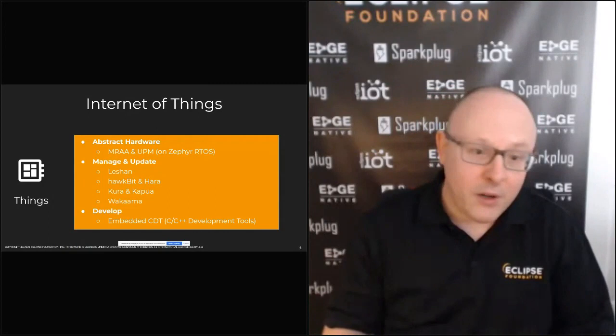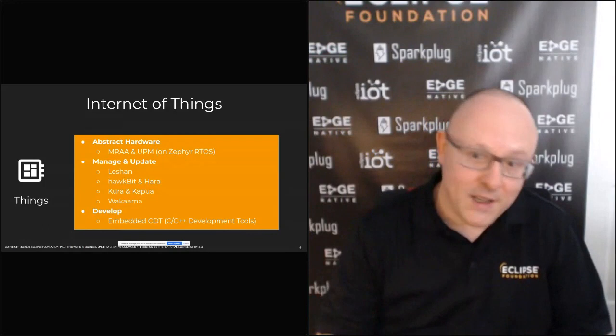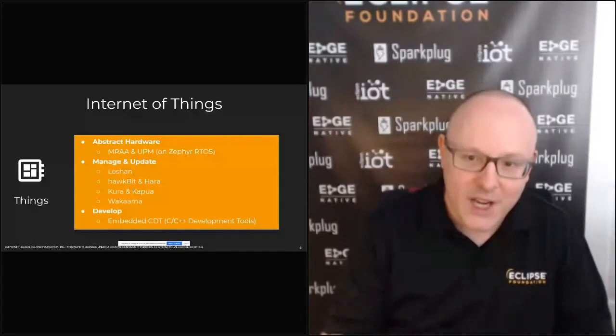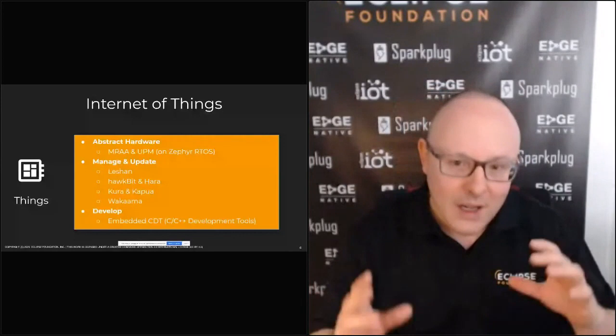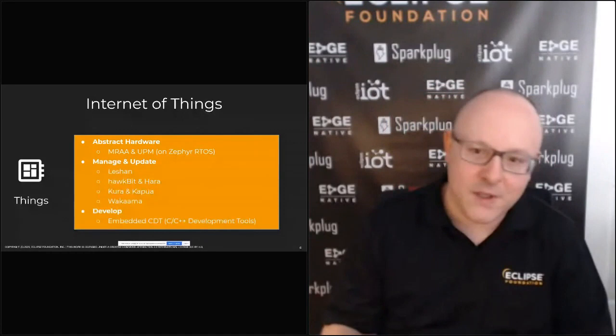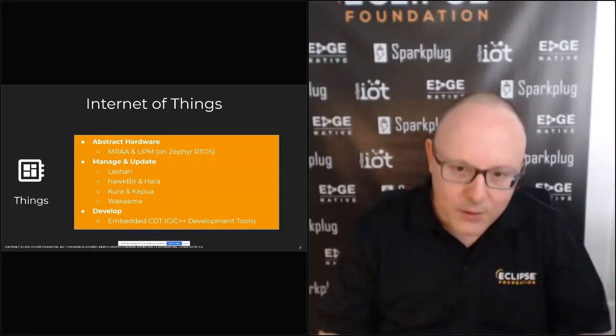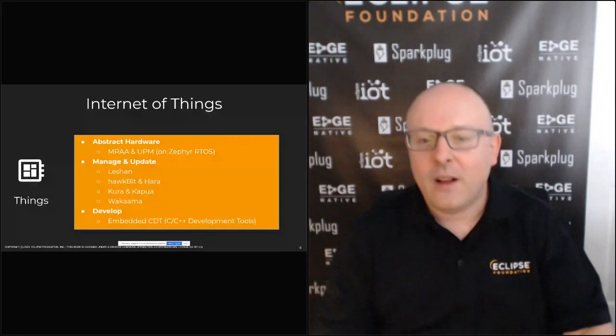The problem with hardware is that over time, whatever hardware revision, CPU, or board you are using will be discontinued. So one way to mitigate that risk is to use a hardware abstraction layer. The MRAA and UPM projects do just that. These are projects from Intel that are very mature, running on Linux and on the Zephyr real-time operating system from the Linux Foundation. MRAA gives you a stable API that abstracts the characteristics of the board, while UPM abstracts your sensors and actuators. Great C libraries that enable you to easily switch MCUs and boards while keeping your software more consistent over time.